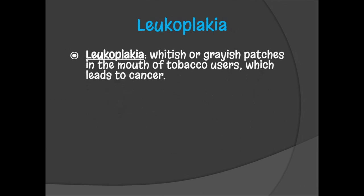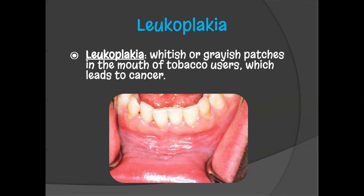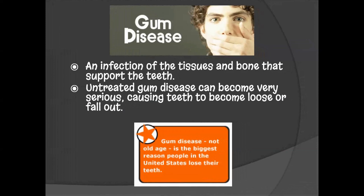Leukoplakia refers to patches that occur in your mouth and can lead to cancer. A lot of people who use tobacco will develop leukoplakia — white and gray patches. You can see here around the teeth a case where it's not even that bad, but it is developing around this user's teeth. I found this picture from a dentist's office. That is a huge indicator of a very serious gum disease that often leads to cancer. Gum disease is an infection of the tissues and bone that support the teeth, and if untreated, it causes people to lose their teeth. In fact, gum disease — not old age — is the biggest reason people in the United States end up losing their teeth.